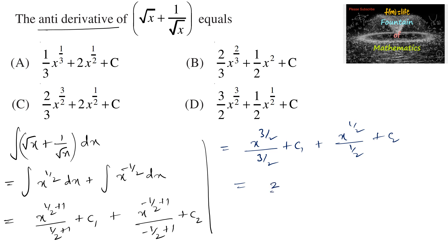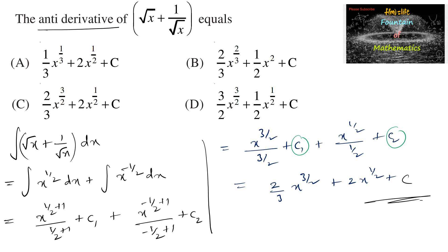So we can write 2 by 3 times x to the power of 3 by 2, plus 2 times x to the power of 1 by 2, plus c1 plus c2, which we can consider as one constant c. So we can write 2 by 3 x to the power of 3 by 2 plus 2 x to the power of 1 by 2 plus c, which is the third option. So the third option is the right answer.